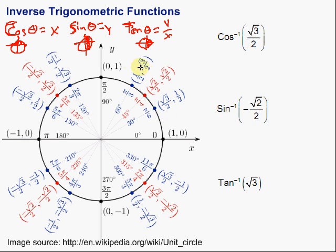Same thing for the cosine — notice we have all the potential x values in the top two quadrants: the negative ones and the positive ones. If we go to the bottom half, we start to get repeats, which is a problem, and we can't have that if it's going to be a function.